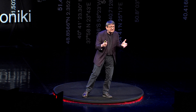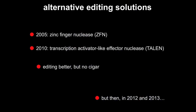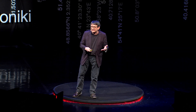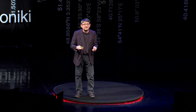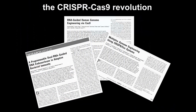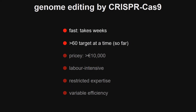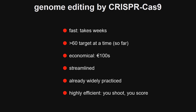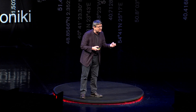The search continued for better, improved methods. That search was rewarded in 2005 and 2010 by zinc finger nucleases (ZFNs) and TALENs — these were better, but still no cigar. Then in 2012 and 2013, it was rewarded with CRISPR-Cas9, with three publications in Science. CRISPR-Cas9 is incredibly quick — it takes weeks, not years. You can target many targets at one time to make multiple edits. It's economical, costing hundreds of euros rather than tens of thousands. It's streamlined, already widely practiced, and highly efficient. You shoot, you score.